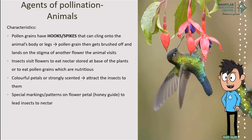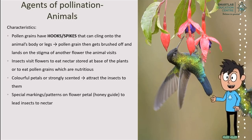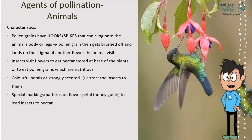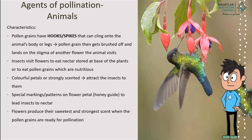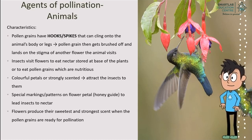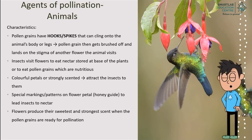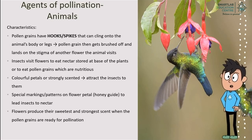Some flowers have special markings or patterns on flower petals, also known as honey guides, which lead insects to the nectar. Lastly, these flowers produce their sweetest and strongest scent when the pollen grains are ready for pollination.